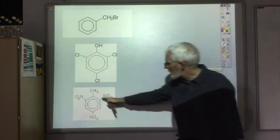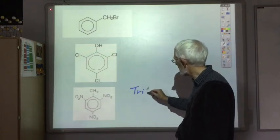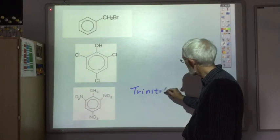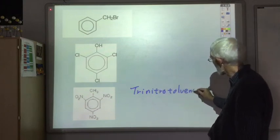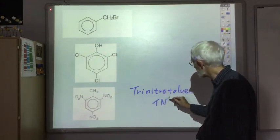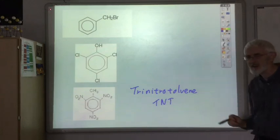This is also a famous compound. Basically, you've got toluene and you've got three nitro groups. So this one is trinitrotoluene, otherwise known as TNT, which is quite a famous explosive.